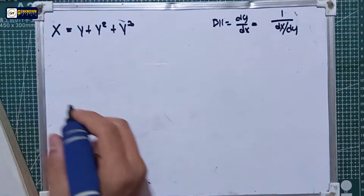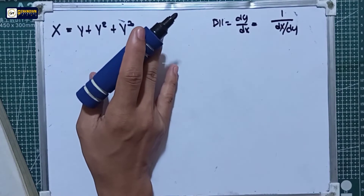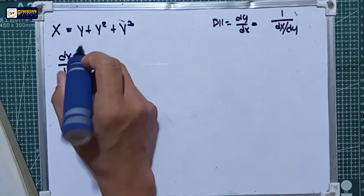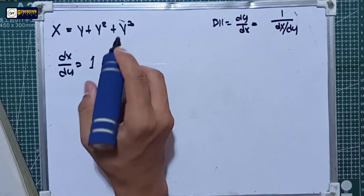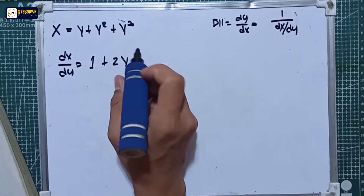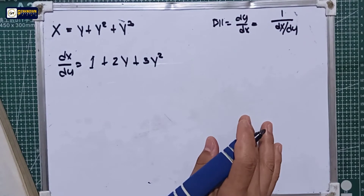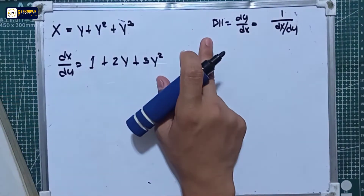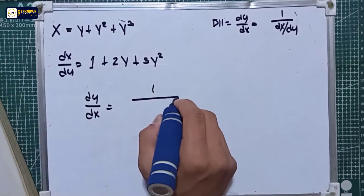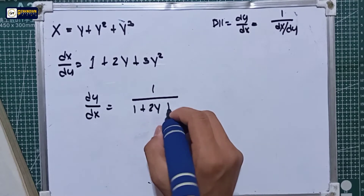The equation in number eight is x equal to y plus y squared plus y cubed. We will derive this x function with respect to y. So dx over dy is equal to: derivative of y is 1, derivative of y squared is 2y, plus derivative of y cubed is 3y squared. We will input this dx over dy into the D11 formula.